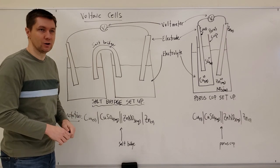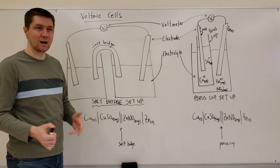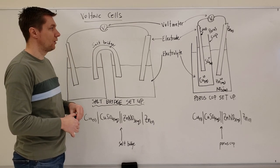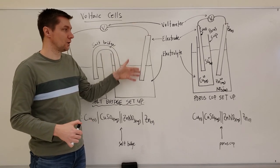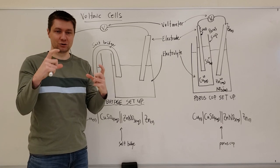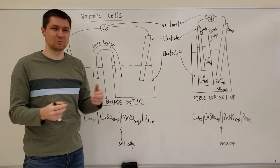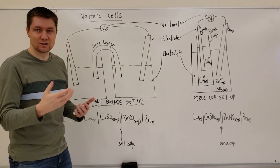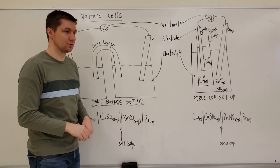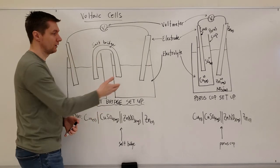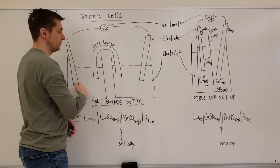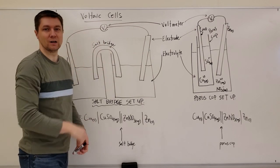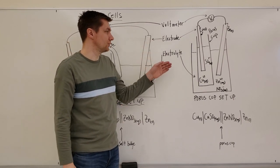Another term you need to know - if you don't remember from Science 9 - is electrodes. Electrodes are just chunks of mostly metals, though sometimes a nonmetal like carbon. They are substances that will conduct electricity or an electric current so the circuit can be completed and electrons can flow through the entire setup.